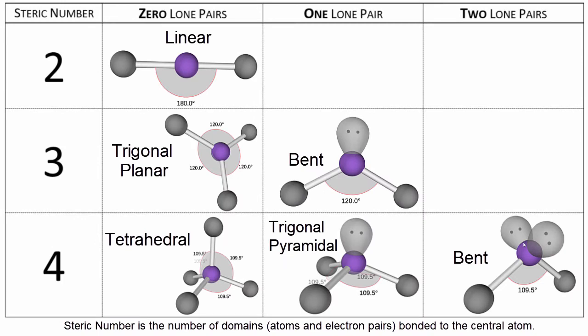There are a number of other molecular geometries, and that depends on how many atoms are attached. It also depends on how many lone pair electrons are attached. They influence the molecular geometry as well. But you can use VSEPR theory to predict what those geometries are based on a correct Lewis structure.